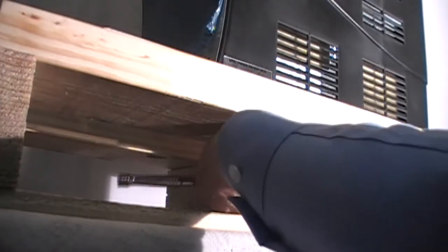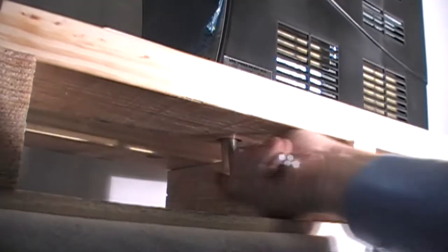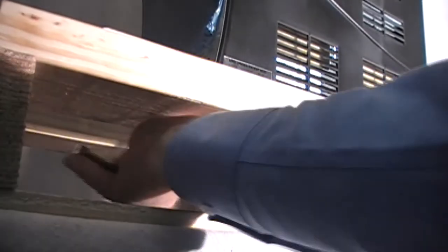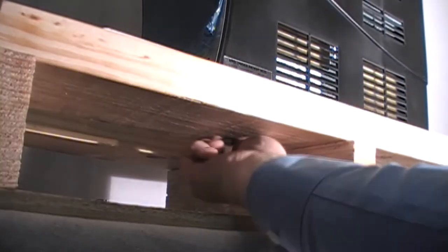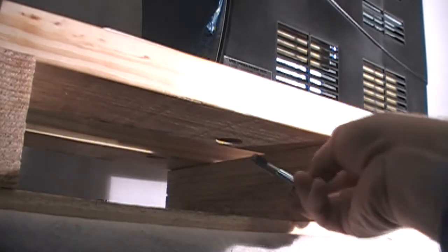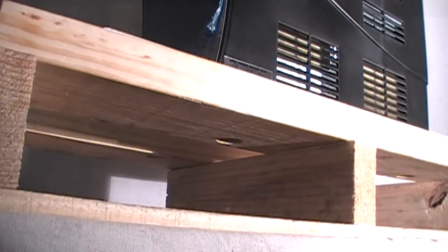To remove the unit from the shipping pallet, locate the hex bolts in each of the four underside corners. Using a 9/16th socket wrench, loosen each of the bolts until they can be removed by hand. Be careful removing the last one so the unit does not slide off the pallet.